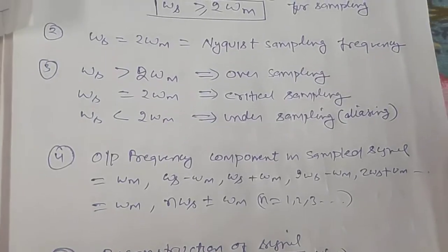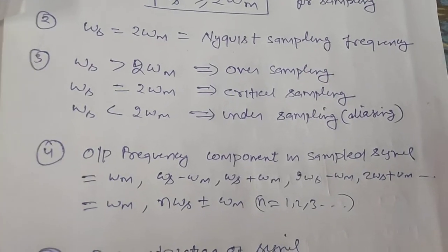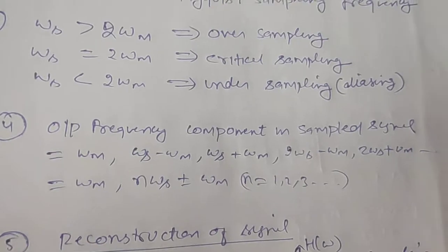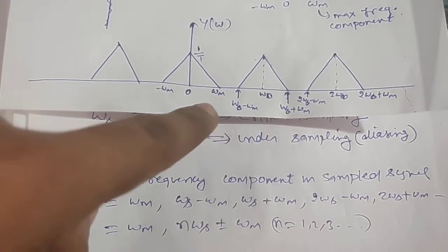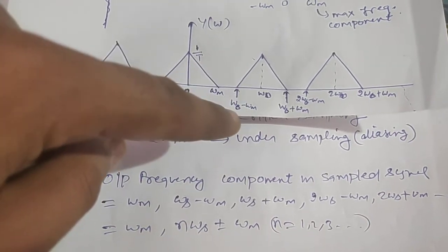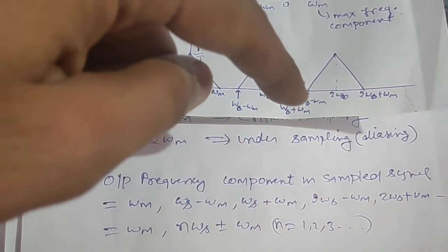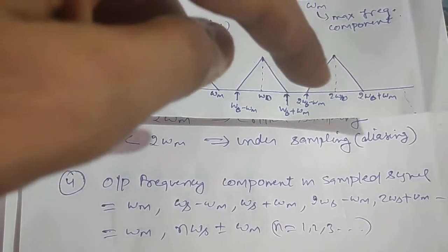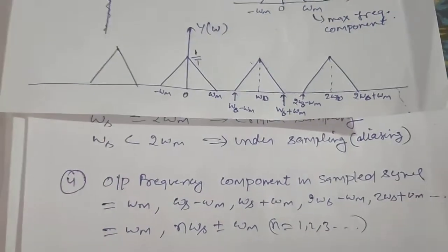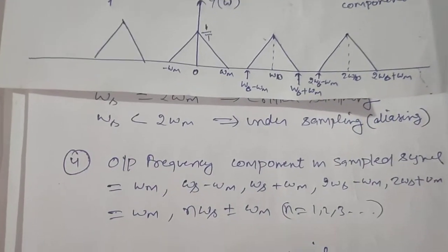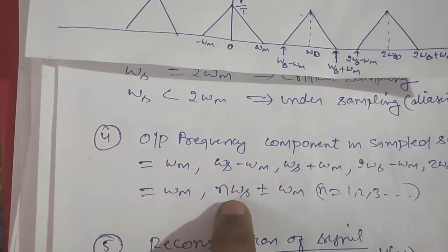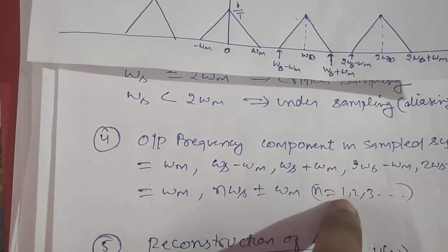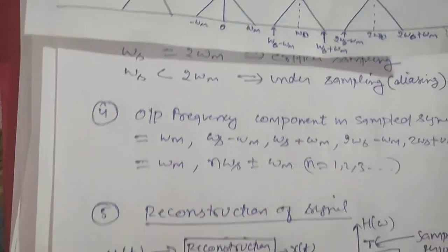The output frequency components present in the sampled signal are: ω_m, ω_s minus ω_m, ω_s plus ω_m, 2ω_s minus ω_m, 2ω_s plus ω_m, and so on. Generalizing, the components are ω_m and n·ω_s plus or minus ω_m, where n equals 1, 2, 3, and so on.